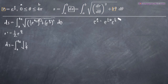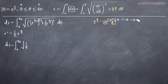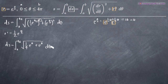Remember that e to the theta over two is the same thing as e to the one half theta. When we square that — e to the one half theta times e to the one half theta — because the bases of these exponential terms are the same, they're both e, that means we can add the exponents. So one half theta plus one half theta gives us one theta, which we can simplify to just theta. So e to the theta over two squared gives us e to the theta. Then the second term, e to the theta over two squared, also gives us e to the theta, and we've got our dθ out here on the end.